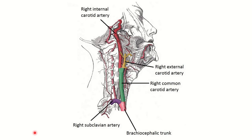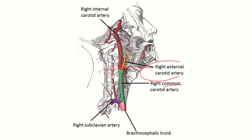Here we can see the arterial supply of the upper part of the body. The brachiocephalic trunk arises from the arch of the aorta and divides into two parts: the common carotid artery and the subclavian artery. The common carotid artery then divides into two parts — the external carotid artery and the internal carotid artery.